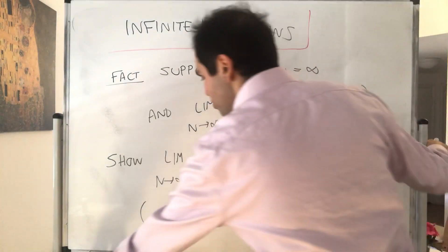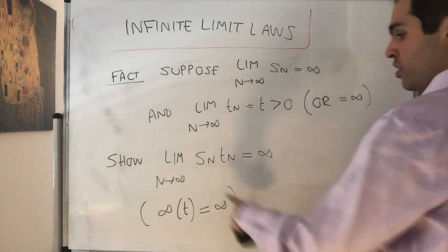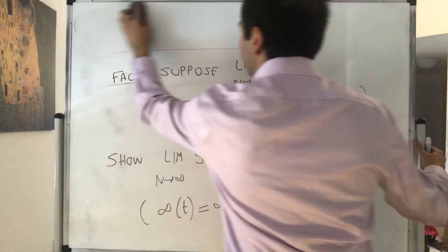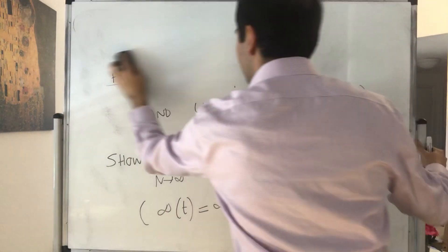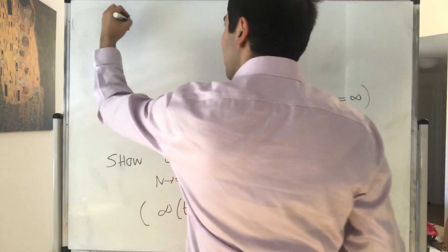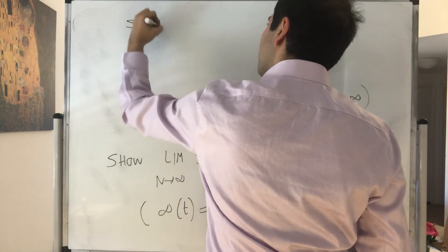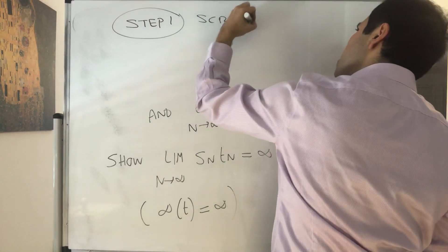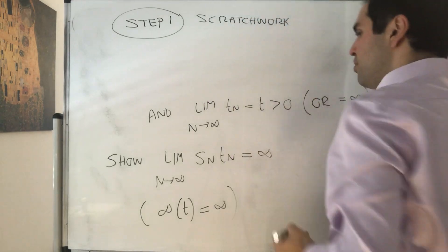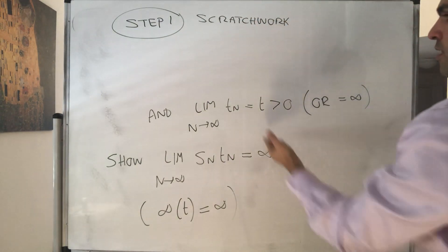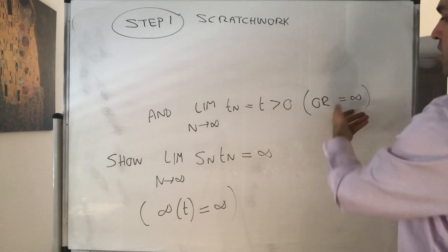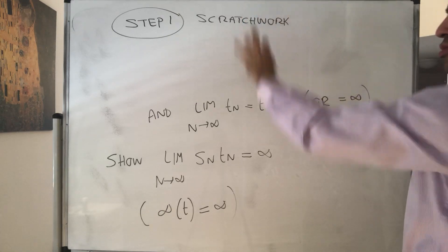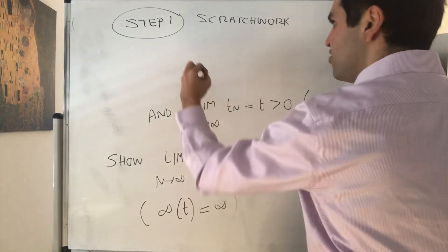All right, and again, we'll do it in two steps. We want to do some scratch work. So in other words, we want to show that this is really as big as we want. And really, the only problem is, what if Tn suddenly becomes zero? Tn converges to a positive limit, or even in the other case, eventually Tn has to be close to T, and therefore, it has to be positive.